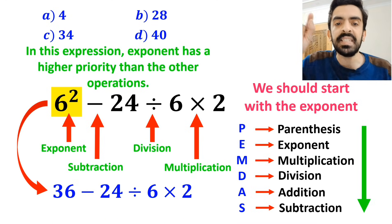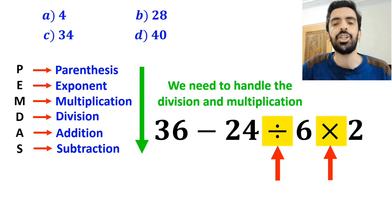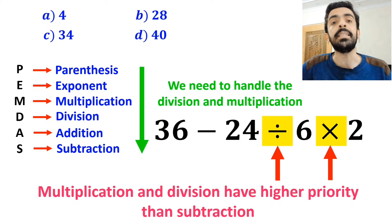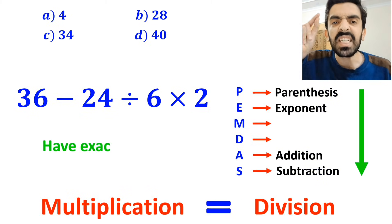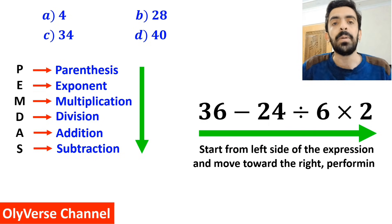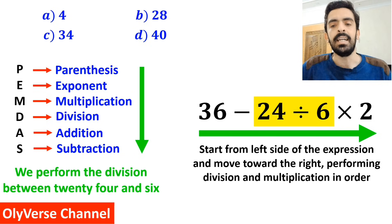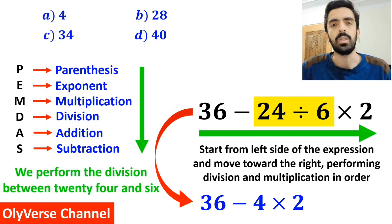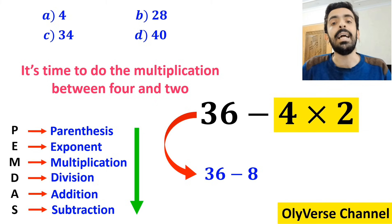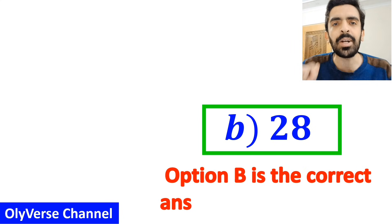So this expression simplifies to 36 minus 24 divided by 6 times 2. In the next step, we need to handle division and multiplication, since they have higher priority than subtraction. It's very important to note that in PEMDAS, multiplication and division have exactly the same level of priority. In this situation, we start from the left side and move toward the right. First we perform the division between 24 and 6, simplifying to 36 minus 4 times 2. Then we do the multiplication, giving us 36 minus 8, and finally the value of this expression is 28. Therefore, option B is the correct answer.